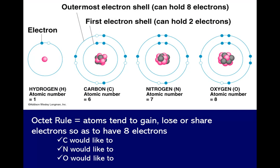We have what we call the octet rule. When we say octet rule, atoms tend to gain, lose, or share electrons so as to have eight electrons. Each element has a certain number of electrons, and some atoms require a number of electrons to become stable. Stability is achieved when the outermost layer is complete with eight electrons.